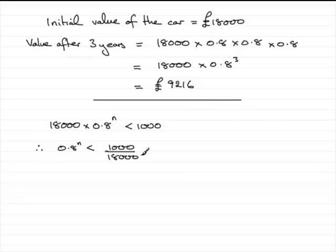This cancels down to 1/18 if you divide top and bottom by 1,000. As a decimal, this is 0.05 recurring, which you can write with a dot over the top.